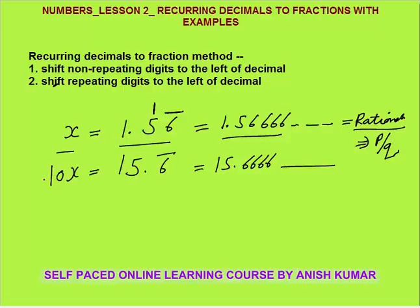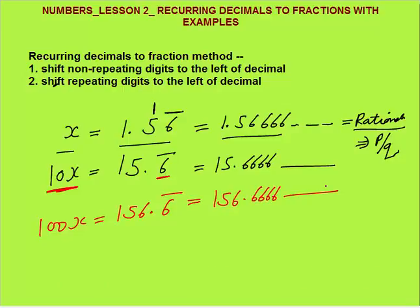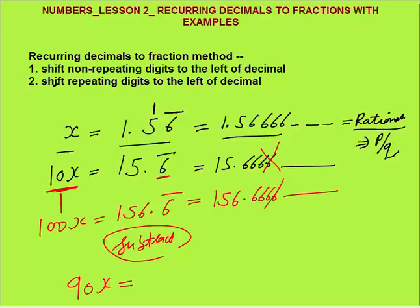Step 2: shift the repeating digit 6 to the left of the decimal. Only one repeating digit, so multiply by 10 again. This gives 100x equals 156.6 bar, that is 156.6666 forever. Now subtract 10x from 100x to get 90x. The .6666... parts cancel out, leaving 156 minus 15, which equals 141.